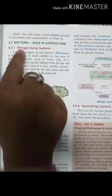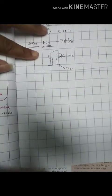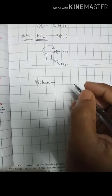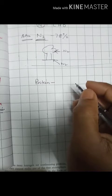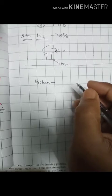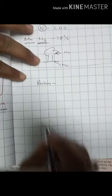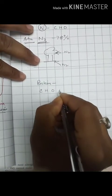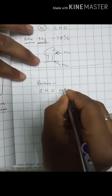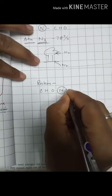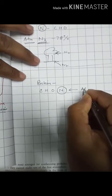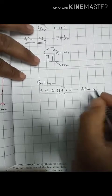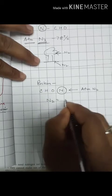Our first topic is nitrogen-fixing bacteria. Protein is one of the most important components of our body because it builds our body — it is the structural part of our body. Similarly, it is the structural part of the plant body. The components of protein are carbon, hydrogen, oxygen, and nitrogen.